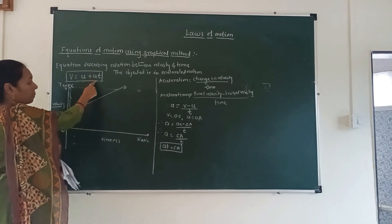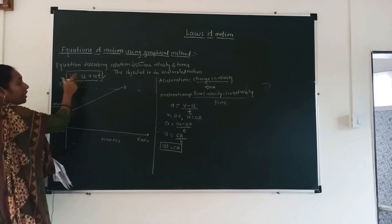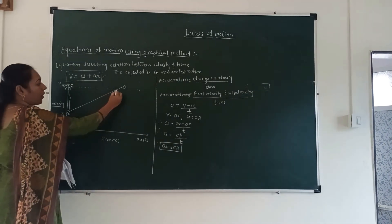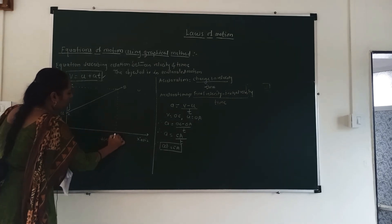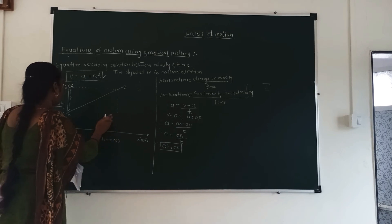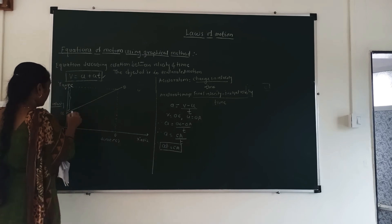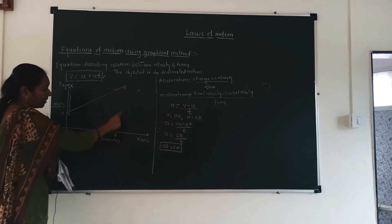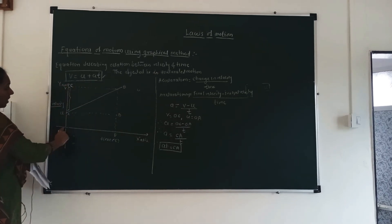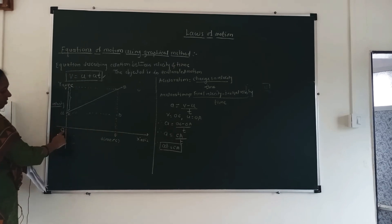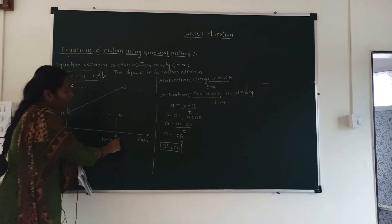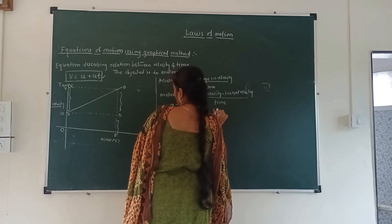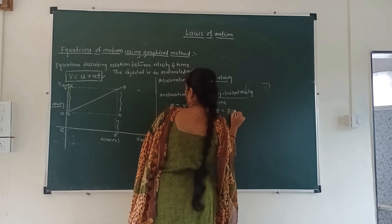Now from point B I draw a horizontal line and label a point E, and from that point I draw a line down and label point D. We get the distance BE, which equals OC, the whole final velocity V. And DE is equal to OA, the initial velocity U. Now, BE is equal to BD plus DE.